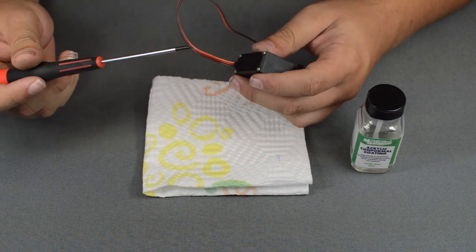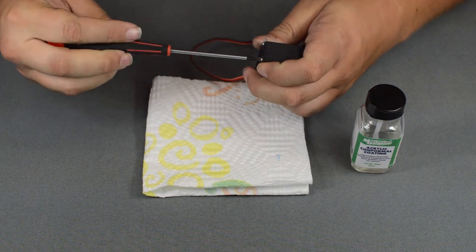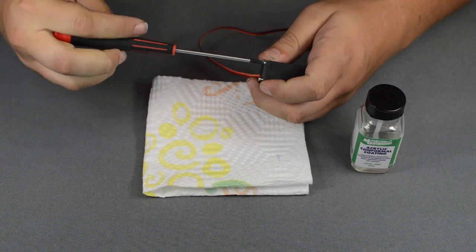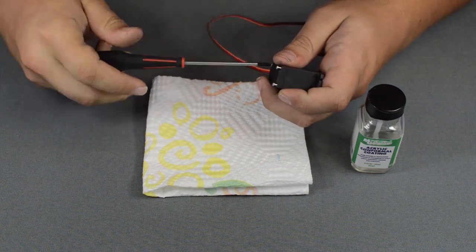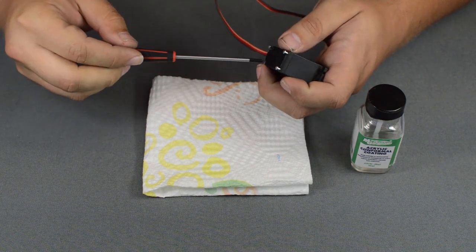First, you're going to take your Phillips screwdriver and undo the four screws on the bottom. It helps to have a good small pointed Phillips.